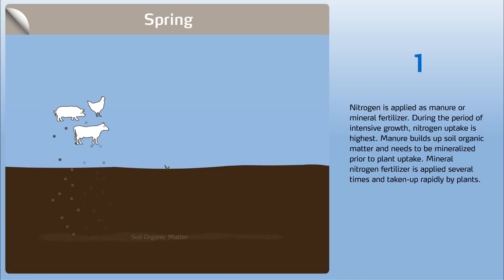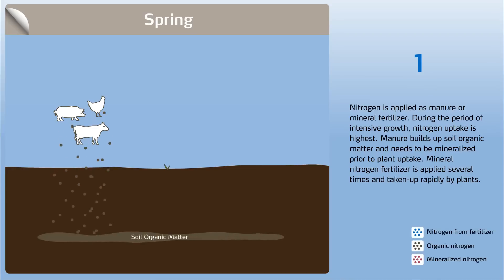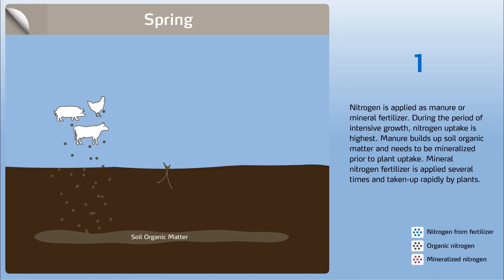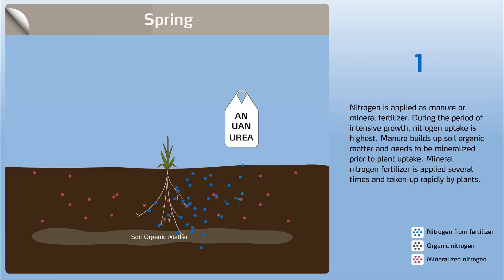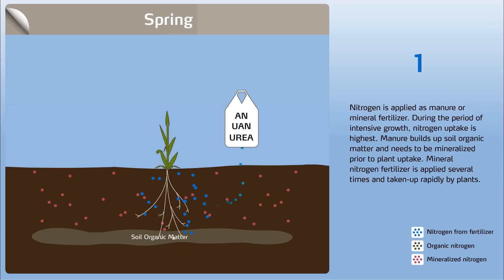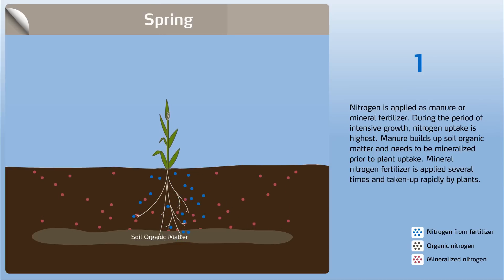Spring. Nitrogen is applied as manure or mineral fertilizer. During the period of intensive growth, nitrogen uptake is highest. Manure builds up soil organic matter and needs to be mineralized prior to plant uptake. Mineral nitrogen fertilizer is applied several times and taken up rapidly by plants.